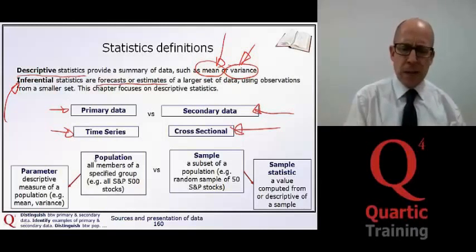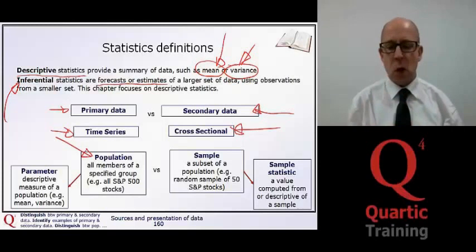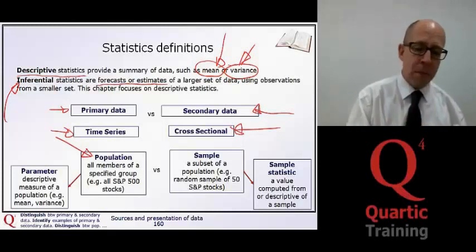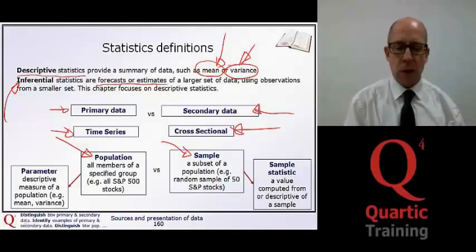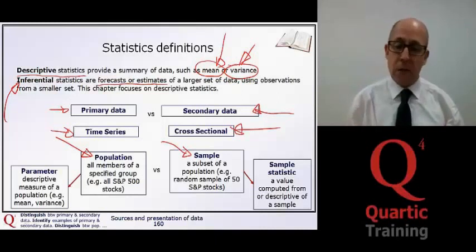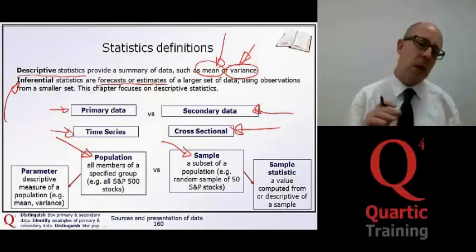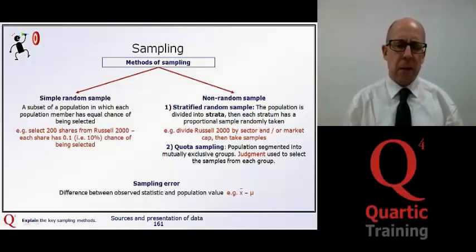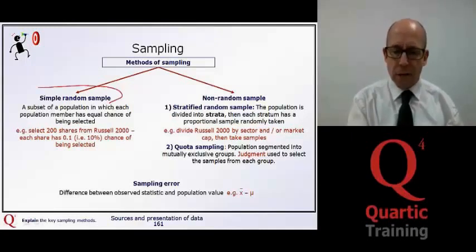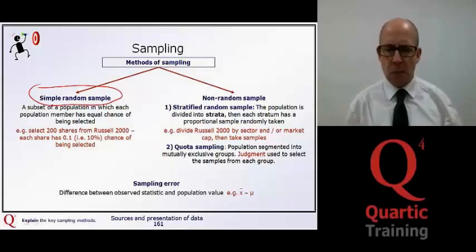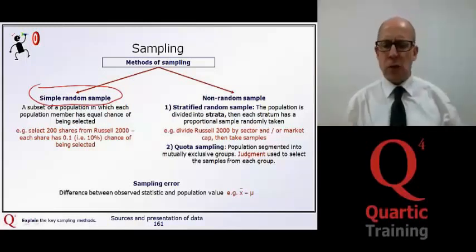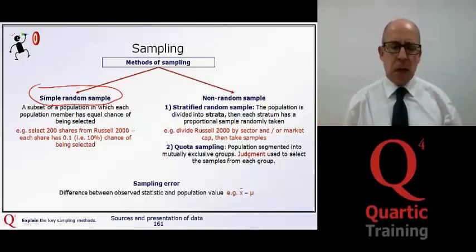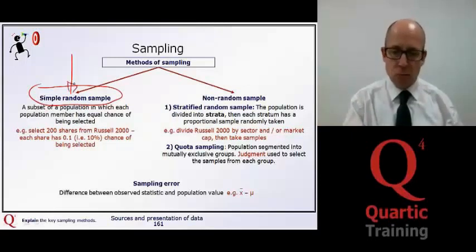We also distinguish between a population, where we've got all of the members of a particular specified group, or where we're just taking a sample. In fact, there are different statistical approaches that we adopt, depending on whether we actually have a population, whether we have all of the observations, or whether we're just dealing with a sample. In the ambit of sampling, there are different ways to do this. A very simple way of doing this is just to take a random sample. Out of the overall population, we pick, at random, various members, all of which should have an equal chance of being selected. Otherwise, it would not be random otherwise.